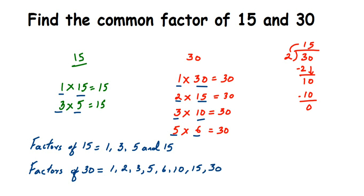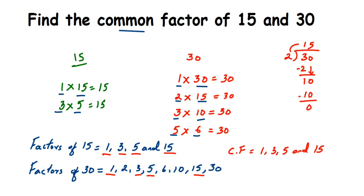Now we find the common factors — the ones present in both lists. 1 is in both, 3 is in both, 5 is in both, and 15 is in both. So the common factors (CF) of 15 and 30 are 1, 3, 5, and 15. I hope this is clear — if you have any questions, drop a comment. Thank you for watching!